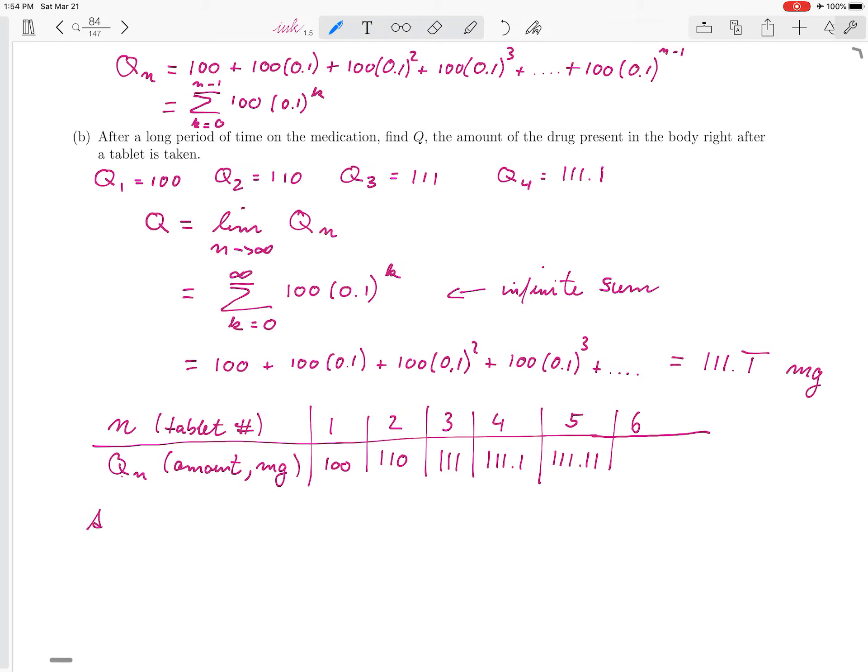So we can conclude that after a long period of time, there will be about 111.1 repeating milligrams of the drug in the body right after a tablet is taken.